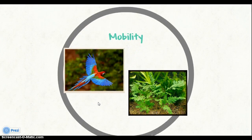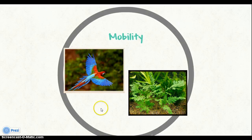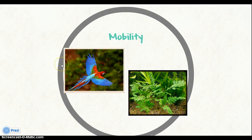The last characteristic is their mobility. Plants are generally rooted in one place and do not move, while animals have the ability to move freely.